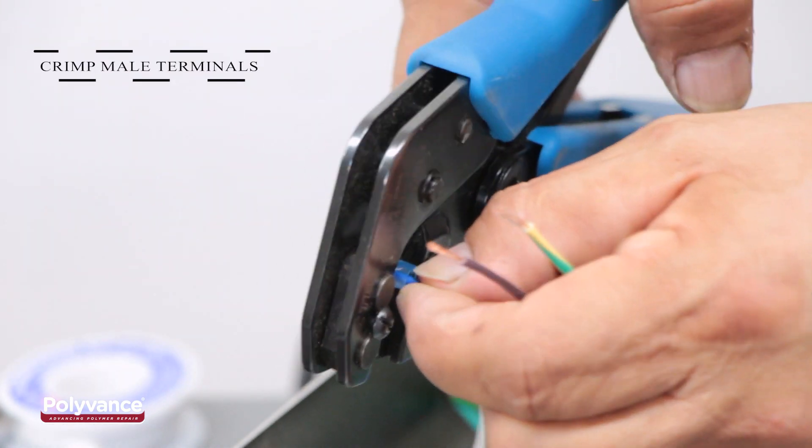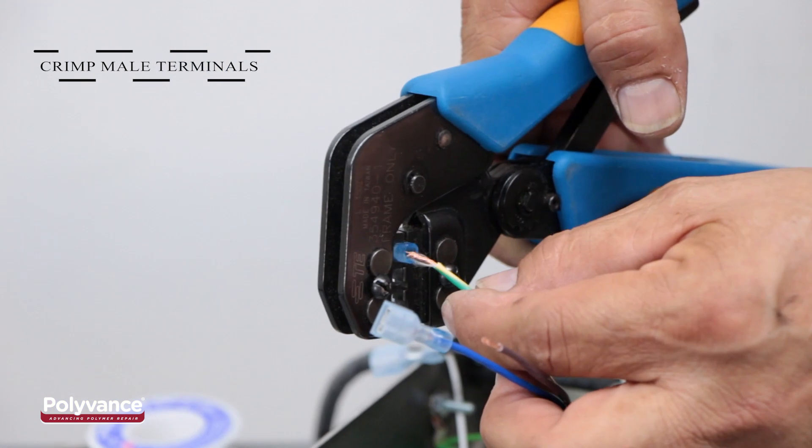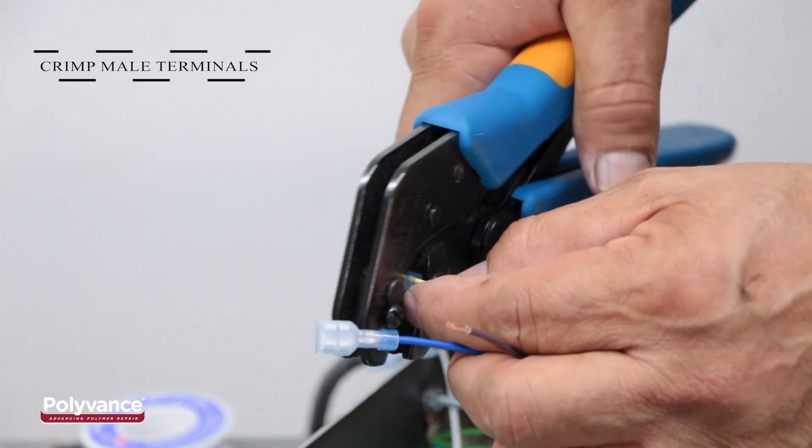Crimp three male terminals on the blue, brown, and green wires from the power cord.